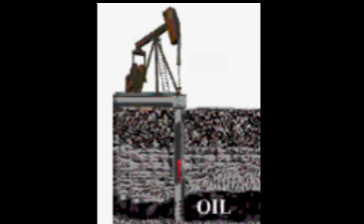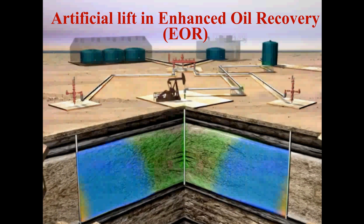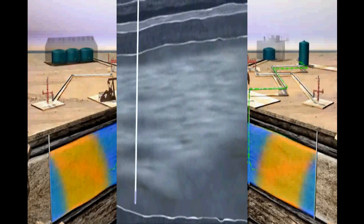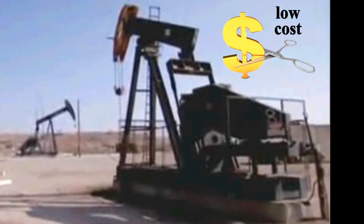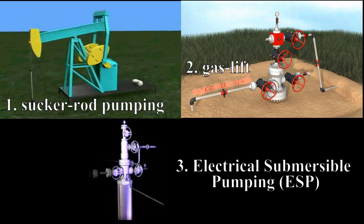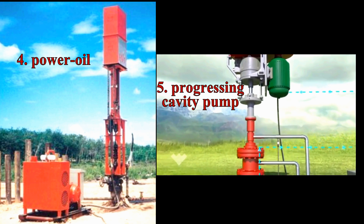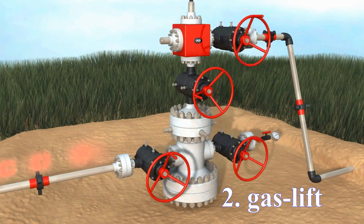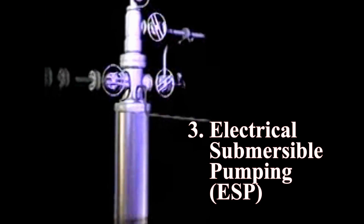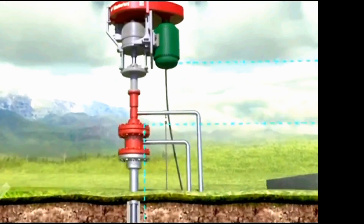Artificial lift is not limited to just supplementing natural lift used in primary recovery. It can also be used to supplement enhanced oil recovery (EOR) when the pressure in the reservoir falls below that at the surface. Its main appeal is its relatively low cost. Artificial lift relies on three main systems examined in detail: one, sucker rod pumping; two, gas lift; three, electric submersible pumping (ESP). Two less-utilized systems are also mentioned: four, power oil; and five, progressing cavity pumps.